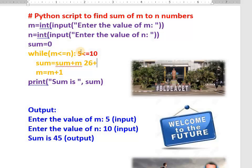26 plus 9 is 35. 35 plus 10 is 45. Very good. Sum is 45. Our code is over. I think you have understood. Very good. Keep it up.